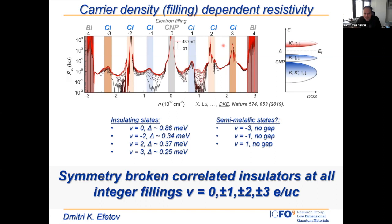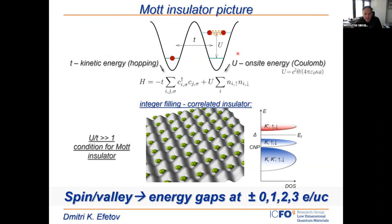In particular, there are correlated insulating states that appear at exactly integer filling of electrons per moiré unit cell — specifically when we fill one, two, or three electrons into the system. These features are not explained by a single particle picture, but are better explained by a Mott-Hubbard picture, where electrons like to localize at different lattice sites. Kinetic energy is given by the hopping term T between neighboring sites, and the Coulomb energy U prohibits two electrons from occupying a single lattice site.